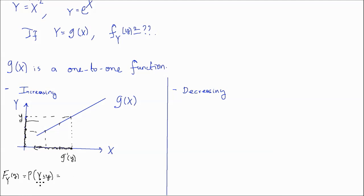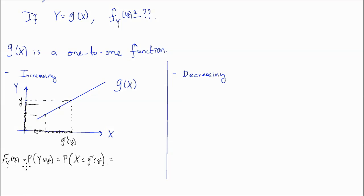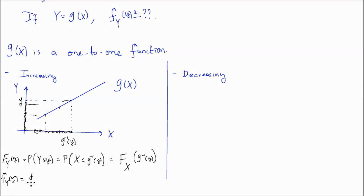That means the probability that y is less than or equal to little y equals the probability that x is less than or equal to g inverse of y. So the CDF of y equals the CDF of x evaluated at g inverse of y. If I want to find the PDF, f_y of little y, I take the derivative with respect to y of the CDF. The derivative of the CDF gives the PDF, so this is the PDF of x evaluated at g inverse of y.